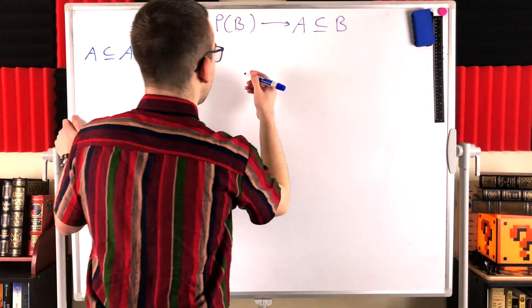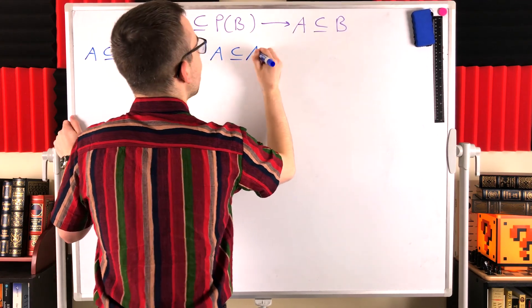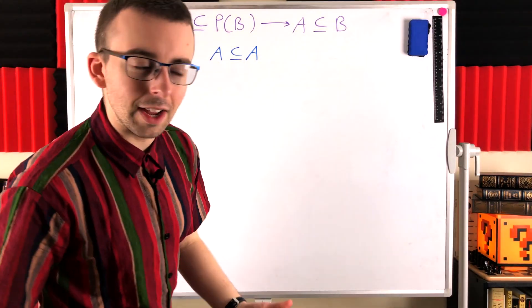And actually, since we're just going to write one line here that's going to end in our desired result, let me write it in the middle. We're just going to go down the middle of the board and then we'll be done. So we know that A is a subset of A.